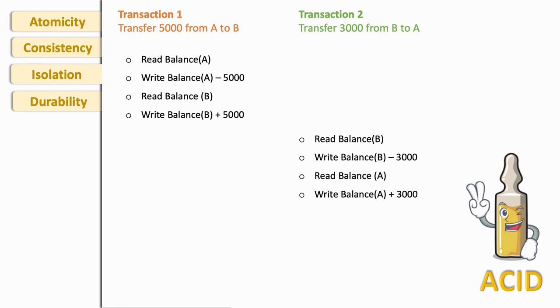So we have two sets of transactions. If transaction one executes first followed by transaction two, then we are transferring first five thousand rupees from account A to B, and then again we are transferring three thousand rupees from account B to A. At the end, A will have thirteen thousand and B will have seven thousand in their account.